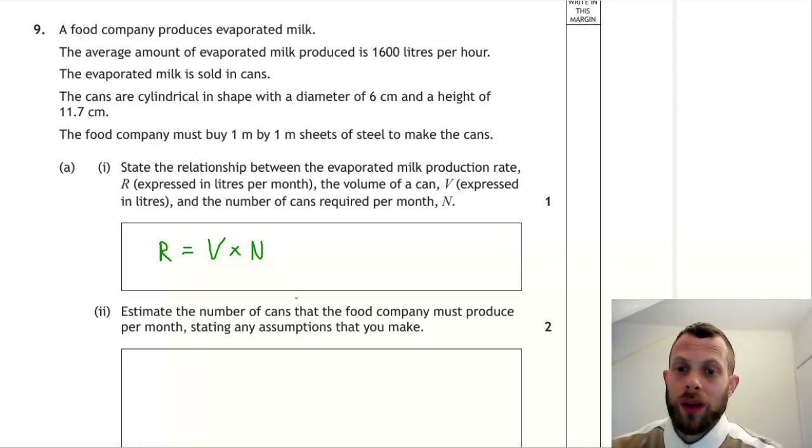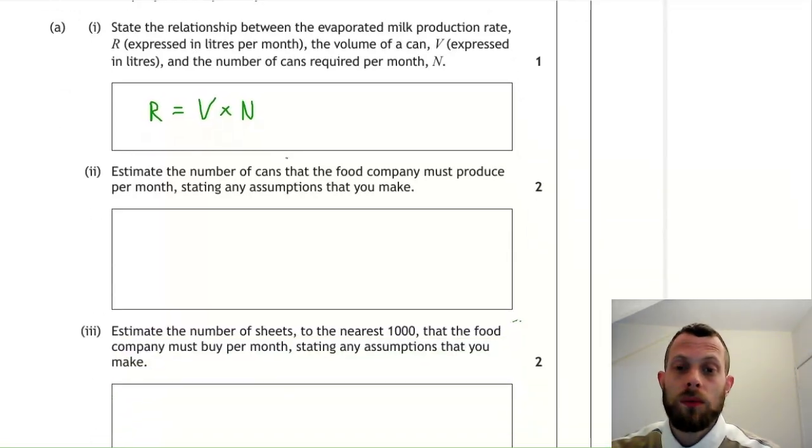Part two, how many cans can the company produce per month, stating any assumptions that you make? So this might be an estimation question where you have to just make up numbers. For producing these cans, however, we are filling the cans up. So we are given the dimensions of one can.